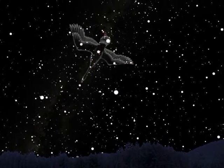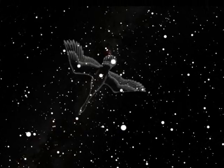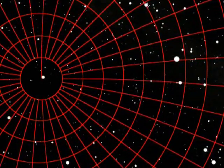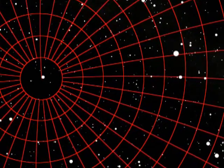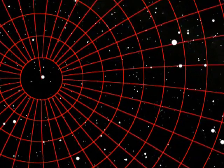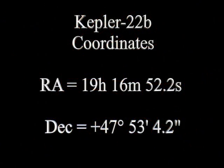Now to find 22b. Astronomers use a coordinate system to locate objects in space. Right ascension and declination are the two coordinates needed to define the location of an object. These are the coordinates for Kepler-22b.